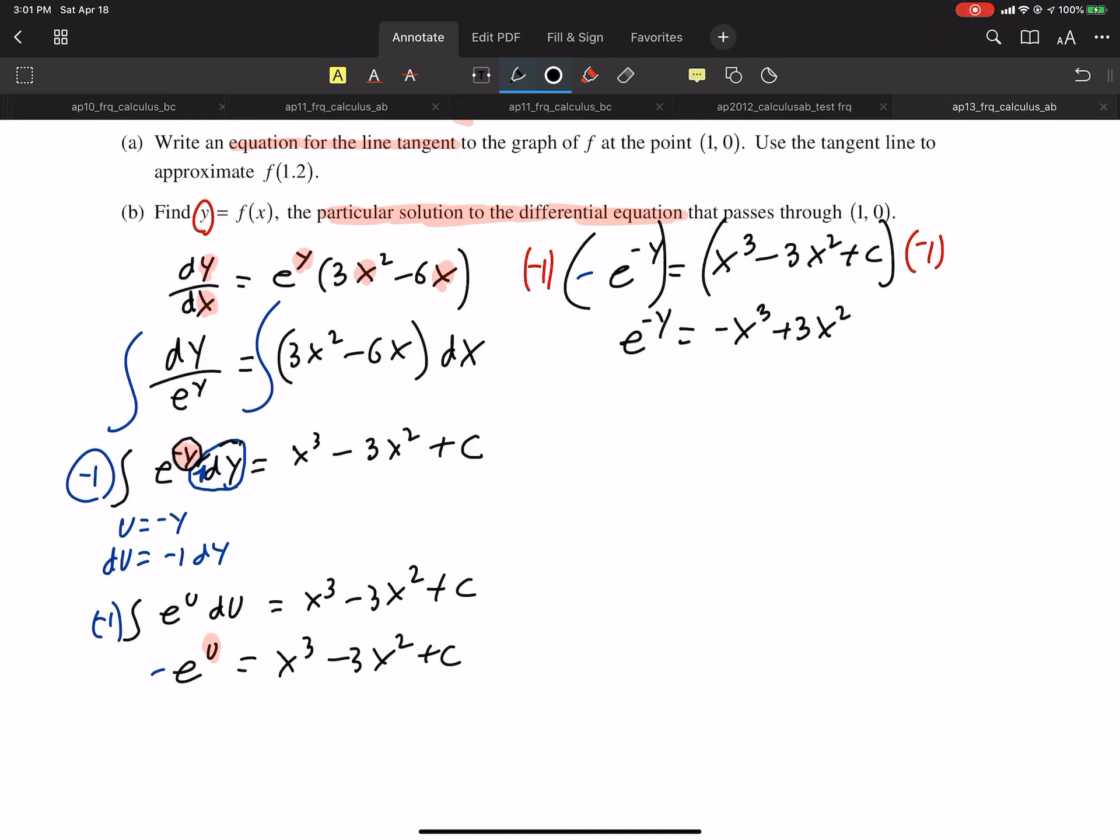Let's plug in (1, 0) into this equation. We're going to get e^(-0) equals negative 1³ plus 3(1²) minus c. This is side work, by the way. 1 equals negative 1 plus 3 minus c. That's going to be 2 minus c. c is going to come out to be 1. Much better. Feel better now. So plug that in to the original equation.